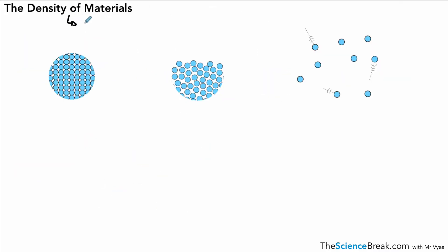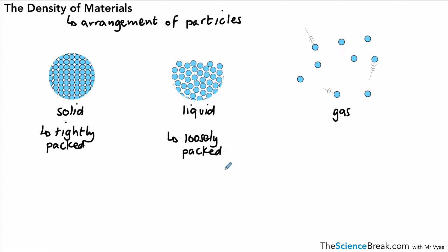Before we do any practice questions, we need to be able to explain the difference in densities of solids, liquids, and gases in terms of the arrangement of the particles. Here are the particles in a solid. The middle one shows the particles in a liquid, and the one on the right shows particles in a gas. The most important thing to remember for a solid in terms of density is that the particles are very tightly packed together. In a liquid, we could say they're loosely packed. They're still quite close to each other, but they're more loosely packed than in a solid. That means they must be further apart.